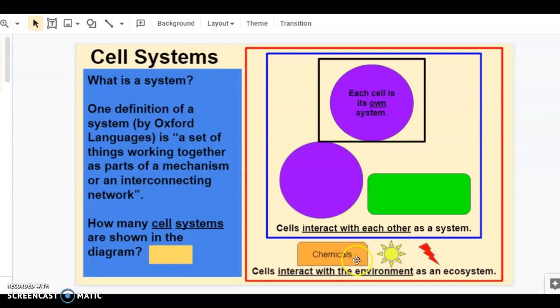Finally, cells interact with the ecosystem in which they live. And part of that ecosystem are the other cells, but part are the abiotic factors like chemicals, temperature and light, energy. So here we have a stack of three systems, all of which cells are a part of.